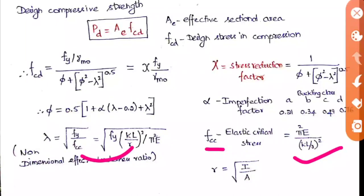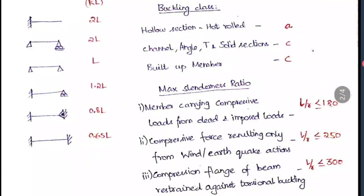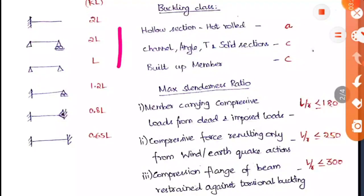The effective length (K × L) is used for the effective slenderness ratio. We have already studied effective lengths in strength of materials for beams — values like L/2, 2L, etc. The same concept applies here for steel structures with some differences. Note that the diagrams are drawn horizontally; just reverse them to visualize vertical columns.